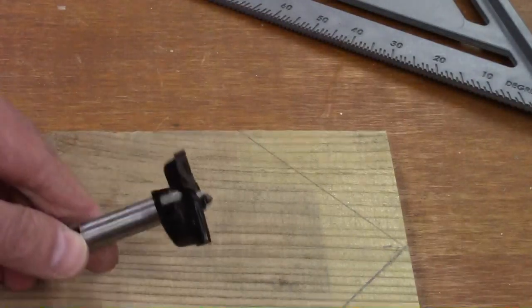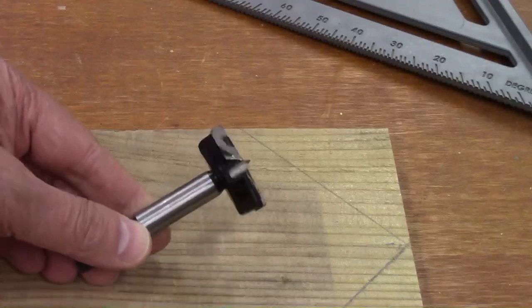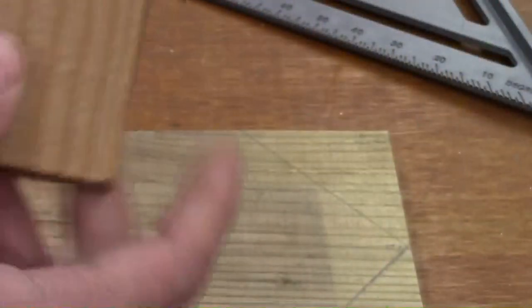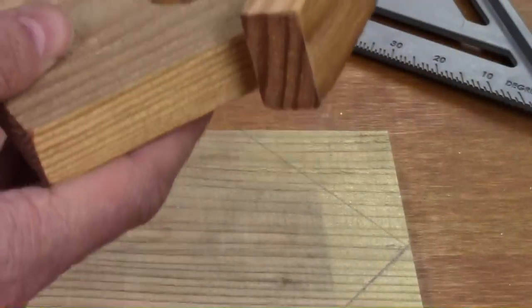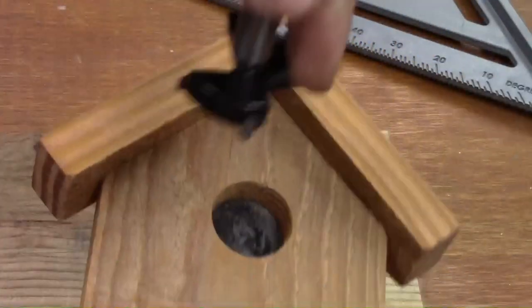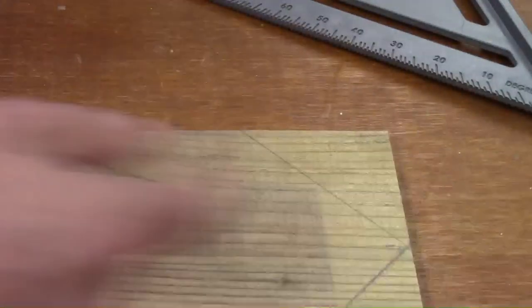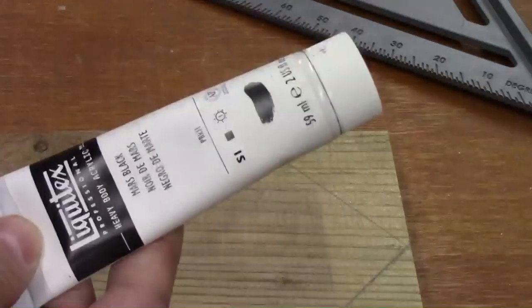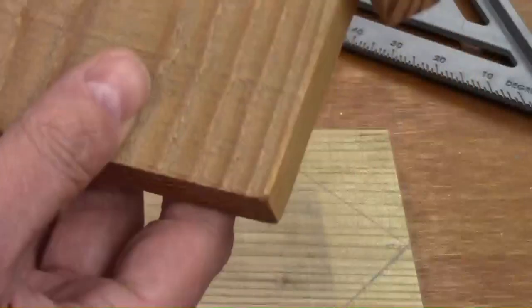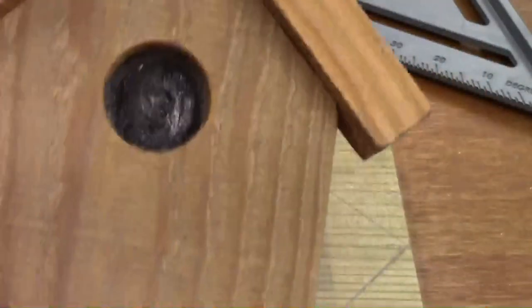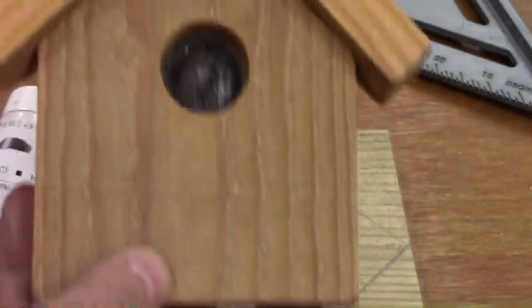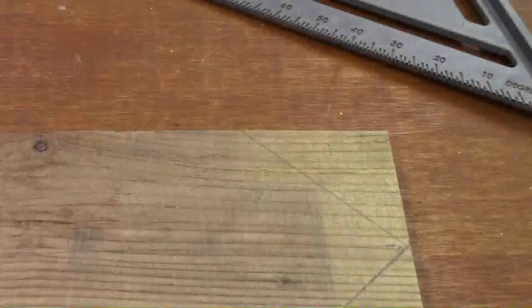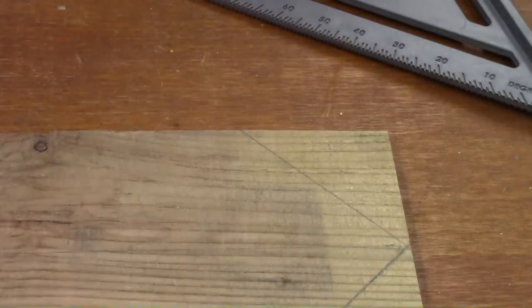For this project you also need about a one and a half inch forstner bit. That is a drill bit that makes flat bottom holes. In the case of the decorative birdhouse, you don't want the hole going all the way through. You just want the hole to go about half way through. Then you need some flat black paint to paint the inside of the hole, to give it the illusion that it's a real birdhouse hanging on the wall. You want the hole to be dark inside like it's a three dimensional birdhouse.